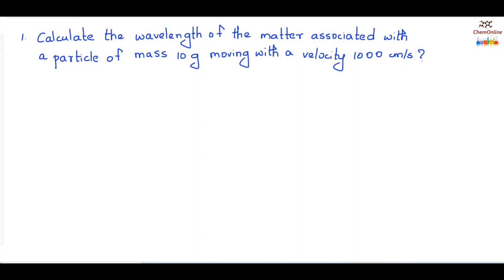Now, let's do one numerical problem. Calculate the wavelength of the matter associated with a particle of mass 10 gram moving with a velocity 1000 centimeter per second. So, you have to calculate the wavelength of the matter. So, according to de Broglie relation, we have the wavelength lambda is equal to h by mv.